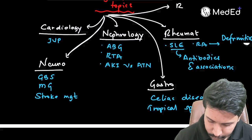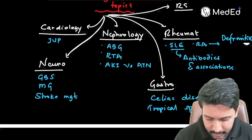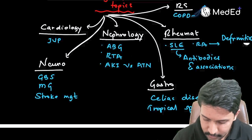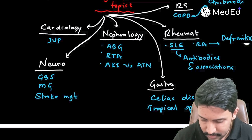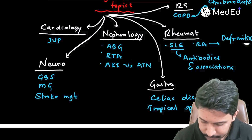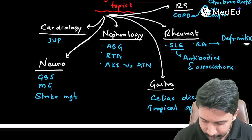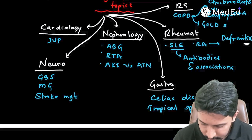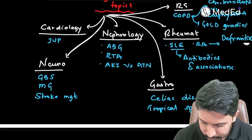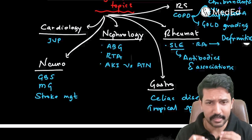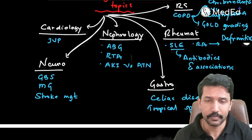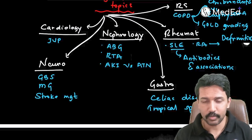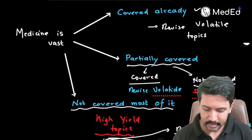From the Respiratory system, concentrate mainly on COPD. Two things are important: first, the differences between chronic bronchitis and emphysema; second, GOLD grading of COPD. I'm not asking you to cover the entire GOLD management protocol — that would take too long — but at least the GOLD grading is something you should cover.